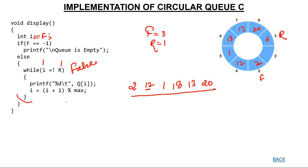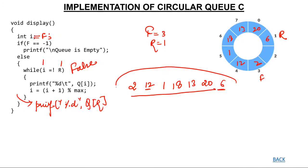After coming out of the while loop, simply add: printf("%d", Q[R]). The value of R is 1, and Q[1] is 6, so 6 gets printed as well. After printing this last element, the entire queue from front to rear is displayed. This was the implementation of a circular queue in C.